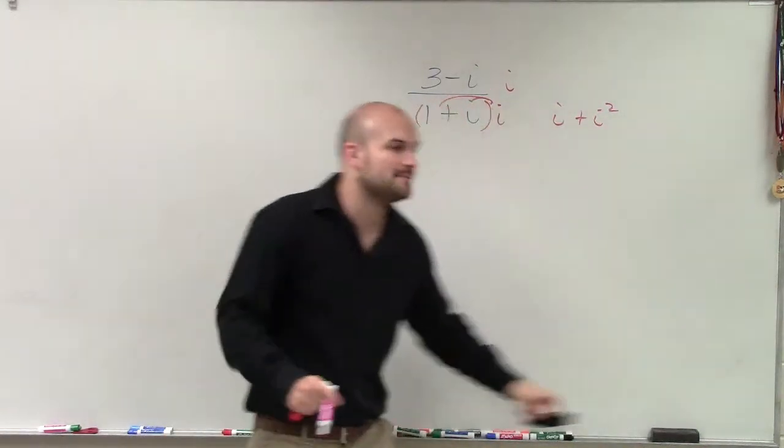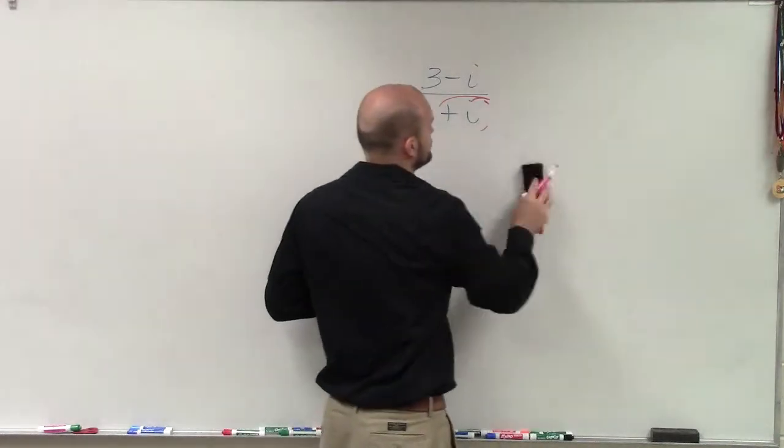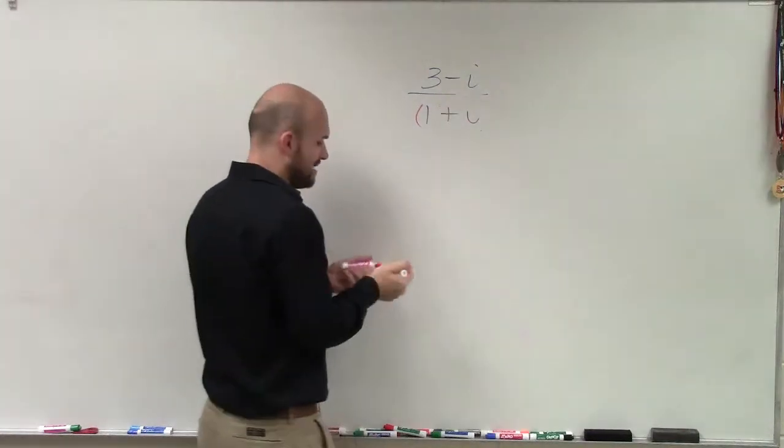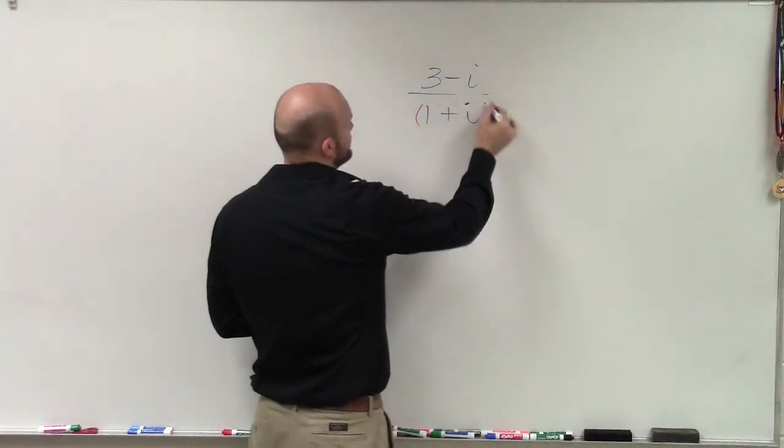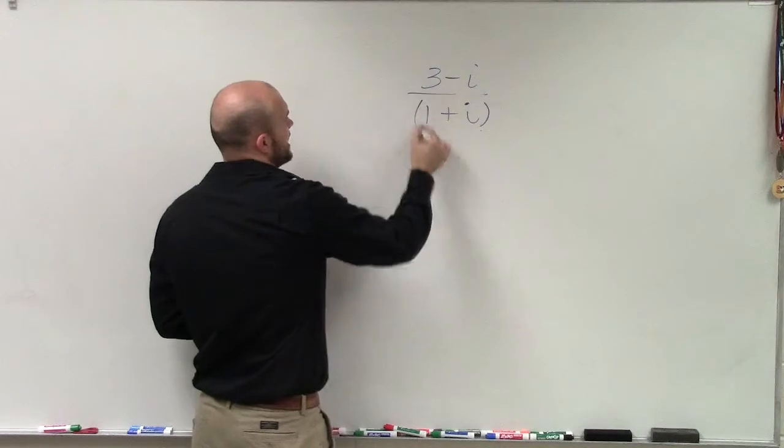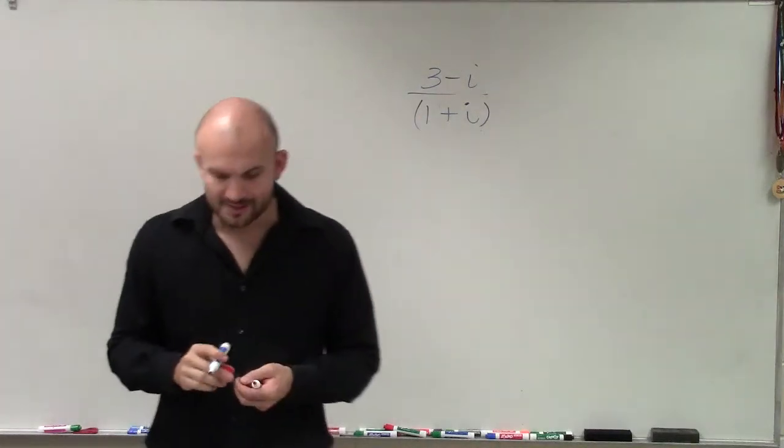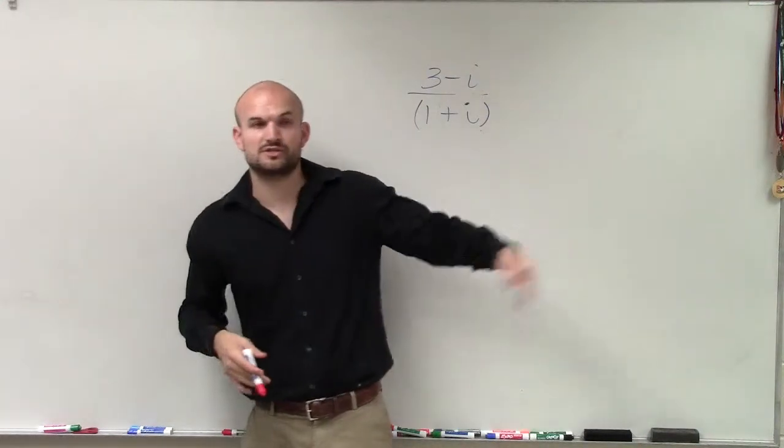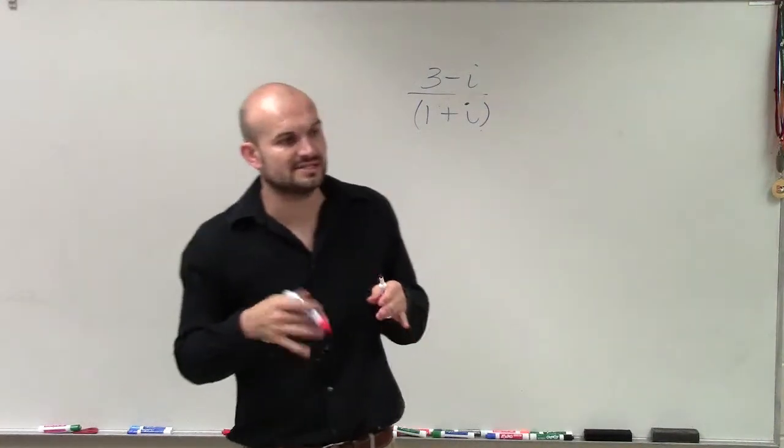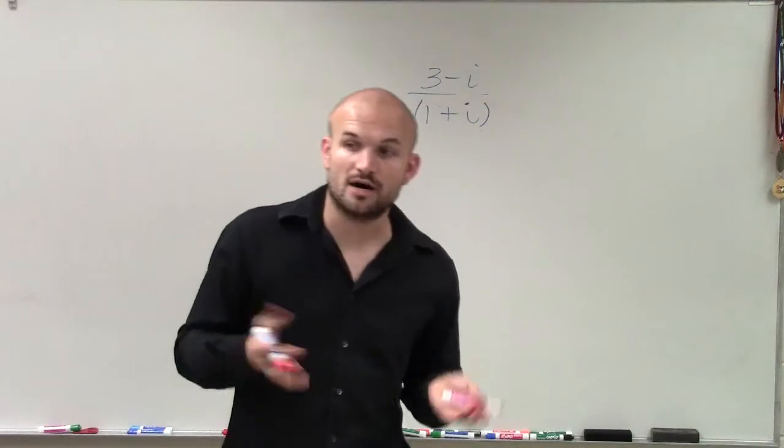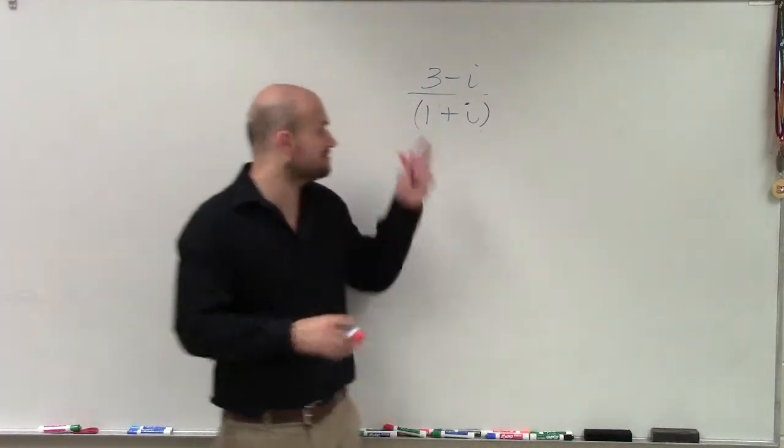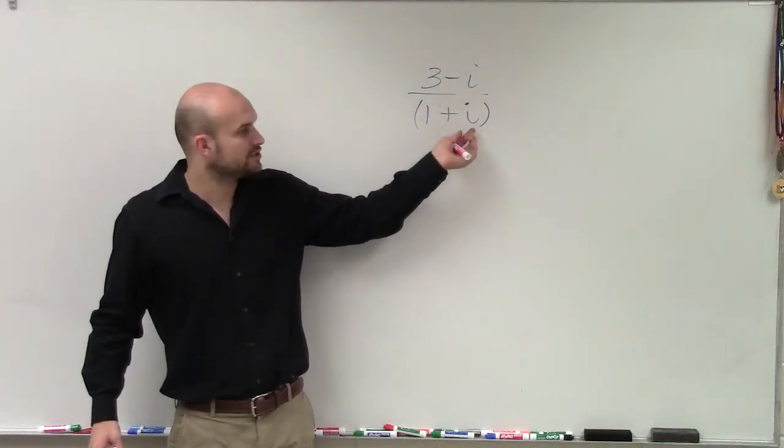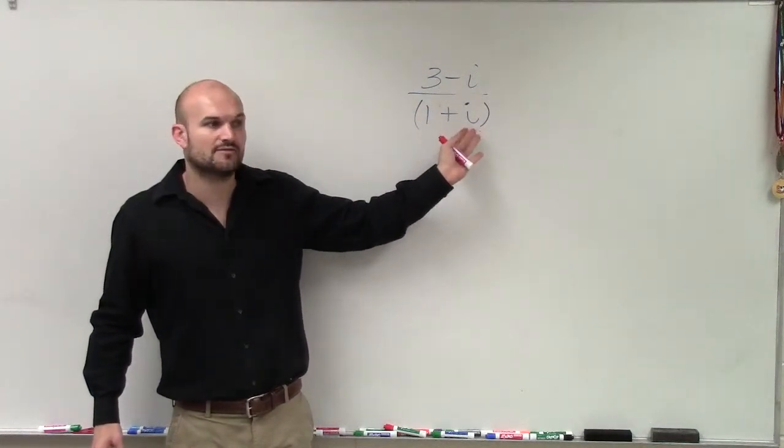So when you have a binomial of an irrational or a complex number, multiplying by i is not going to be enough. You have to multiply by what we call the conjugate. And the conjugate is going to be our exact same binomial, but now instead of having a positive, we'll have a negative. You're going to switch the sign in front of your imaginary number, not for both of them. It's not going to be a negative 1 minus i. It's another very common mistake. You're just changing the sign of your imaginary unit.